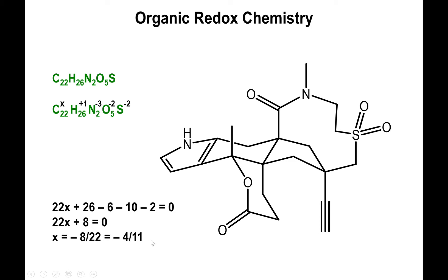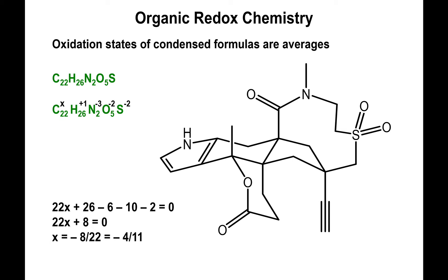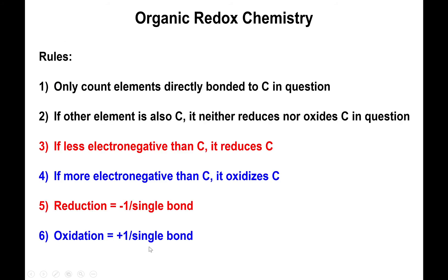The reason we're getting these weird numbers for carbon is that not all carbons are the same type, as we already saw from the different numbers of hydrogens they have. Condensed formulas represent the average charge of all the carbons, not the individual charge. To determine the charge of each carbon individually, we consider only those elements directly bonded to that carbon. If the element bonded to carbon is also carbon, the two have the same electronegativity, so there's no electron pull either way — no oxidation, no reduction, and the carbon remains neutral.